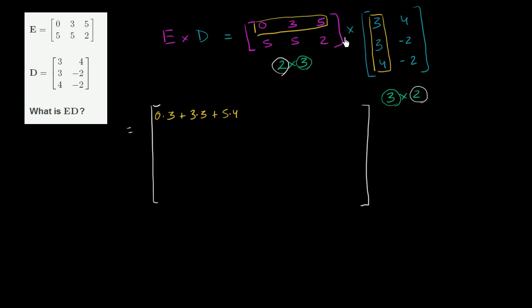Now we can do the top right entry. This was the top left, now we're going to do the top right. So the top right entry is going to be this row times this column. Notice, the entry is getting the row from the first matrix and the column from the second one. That's kind of determining its position. So once again, this is going to be 0 times 4 plus 3 times -2 plus 5 times -2 and we keep going.